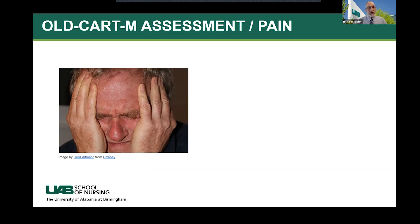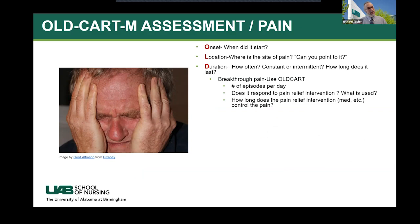One way to formulate an assessment plan is to use the acronym OLDCART-M. O is for onset — when did it start? L is location — where is it? D is duration — how often is it, is it consistent or intermittent, and how long does it last? You can also use this for breakthrough pain if you've given medication or an intervention and want to see how it's working, particularly if you're using a long-acting opioid.